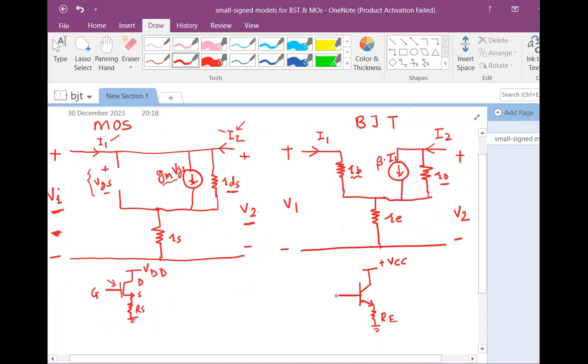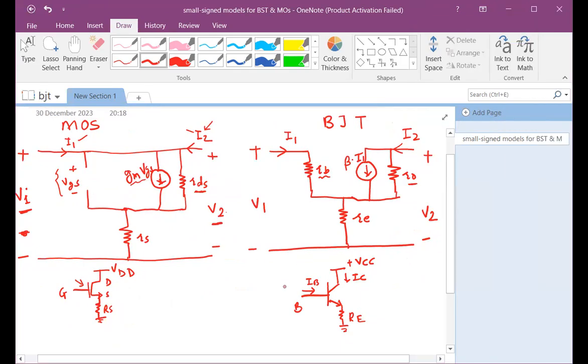Then you have the base terminal, and therefore this is your ib, and that's your collector current ic or i2. That is how your circuit looks like. So here we have explained how to draw the small signal models for MOSFET and BJT.